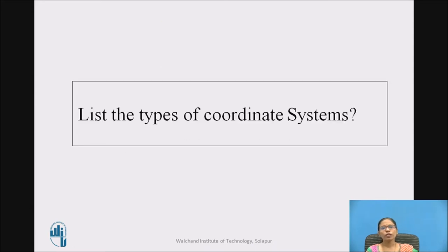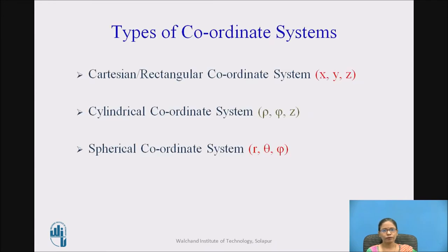Before we move further, as we are finding out the relation between the coordinate systems, let us list the types of coordinate systems and their coordinates. Types of coordinate systems are: cartesian or rectangular coordinate system (x, y, z), cylindrical coordinate system (rho, phi, z), and spherical coordinate system (r, theta, phi).